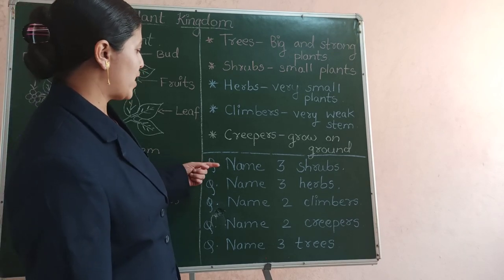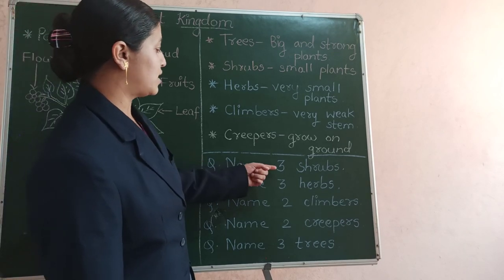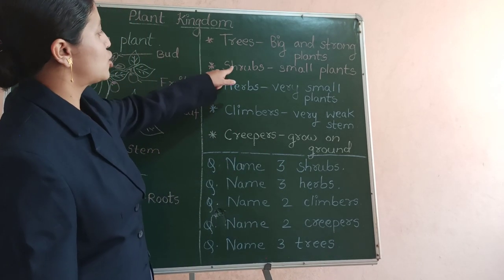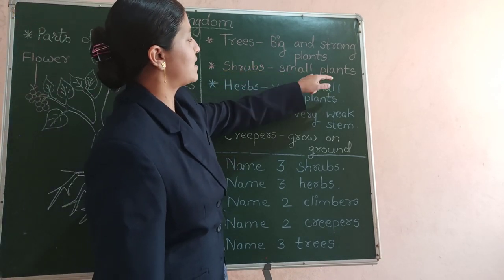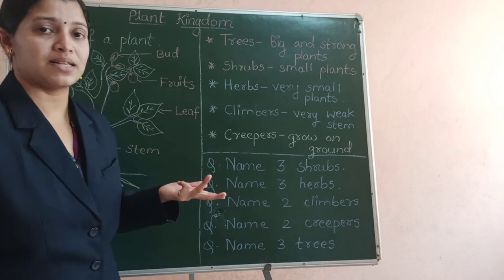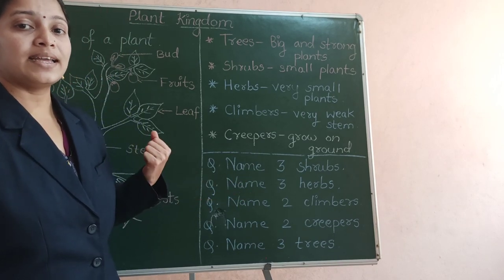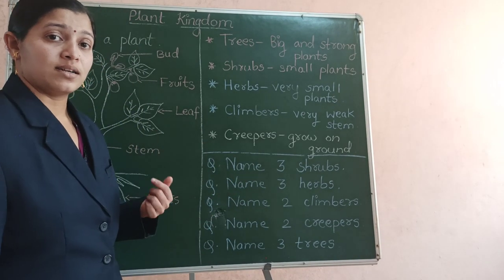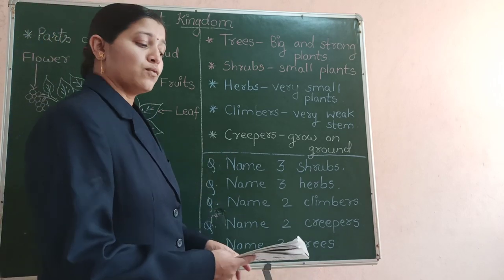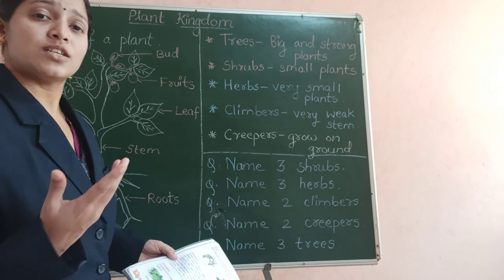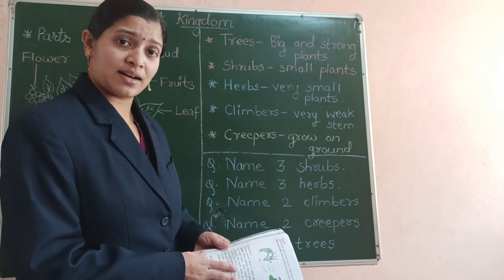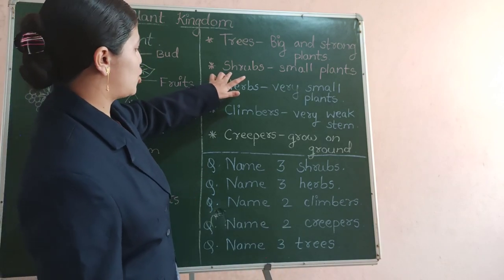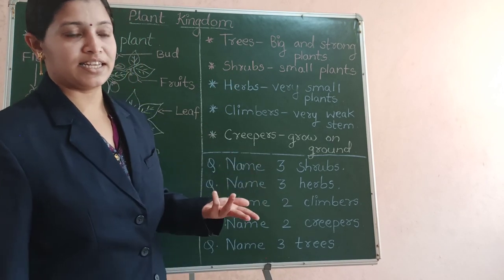The first question is name 3 shrubs. Shrubs are small plants. Examples are rose plant, cotton plant, henna plant, jasmine plant and tulsi plant. You can write any 3 names.